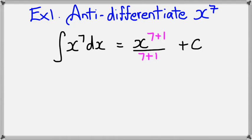And of course, we've got to put plus c, because when we're integrating it, we don't know if there was a constant there or not. So simplifying this, it'll be x to the power of 8 over 8 plus c.